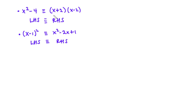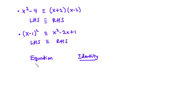Basically, if you expand the expressions on the left hand side, that will be identical to the expressions on the right hand side. Now let's consider the major difference between an equation and an identity. In an equation, the equality is true for a restricted set of values.